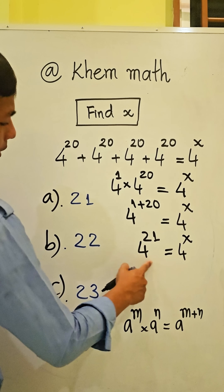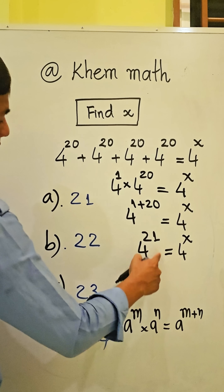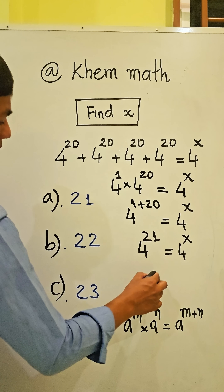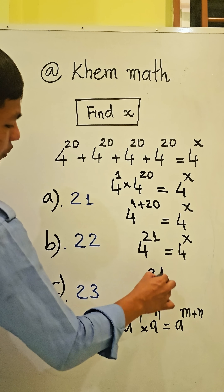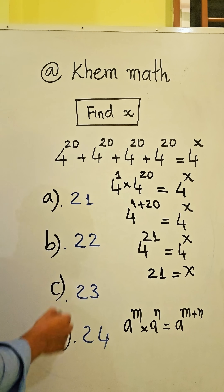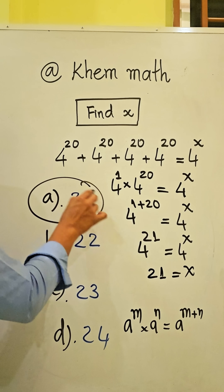The bases are the same, so the exponents must be equal. We get 21. So our answer is A.